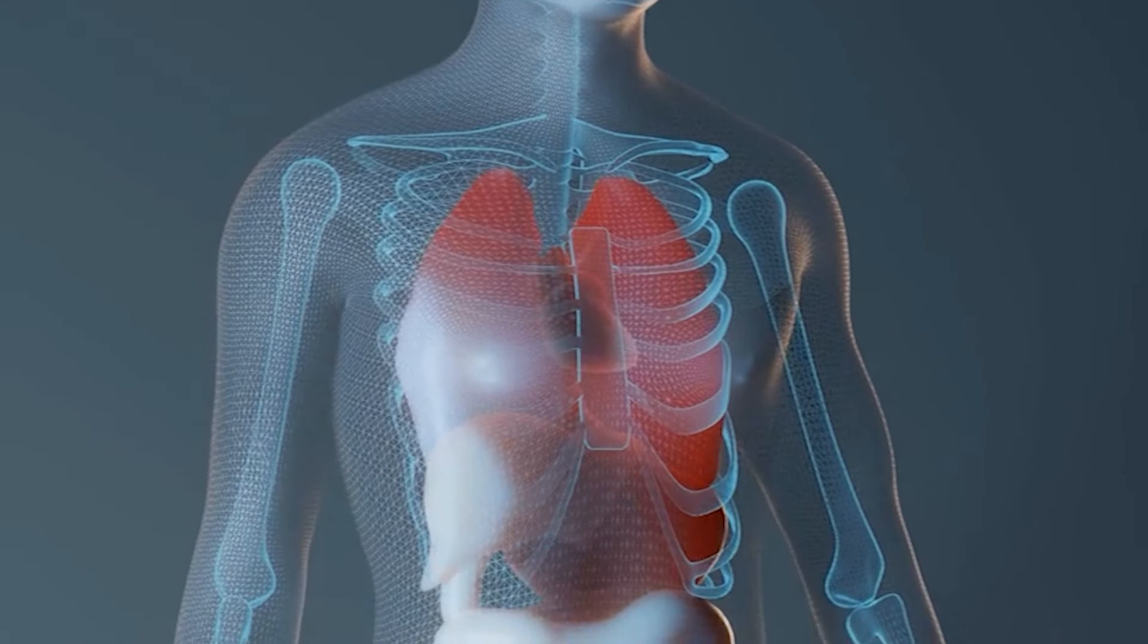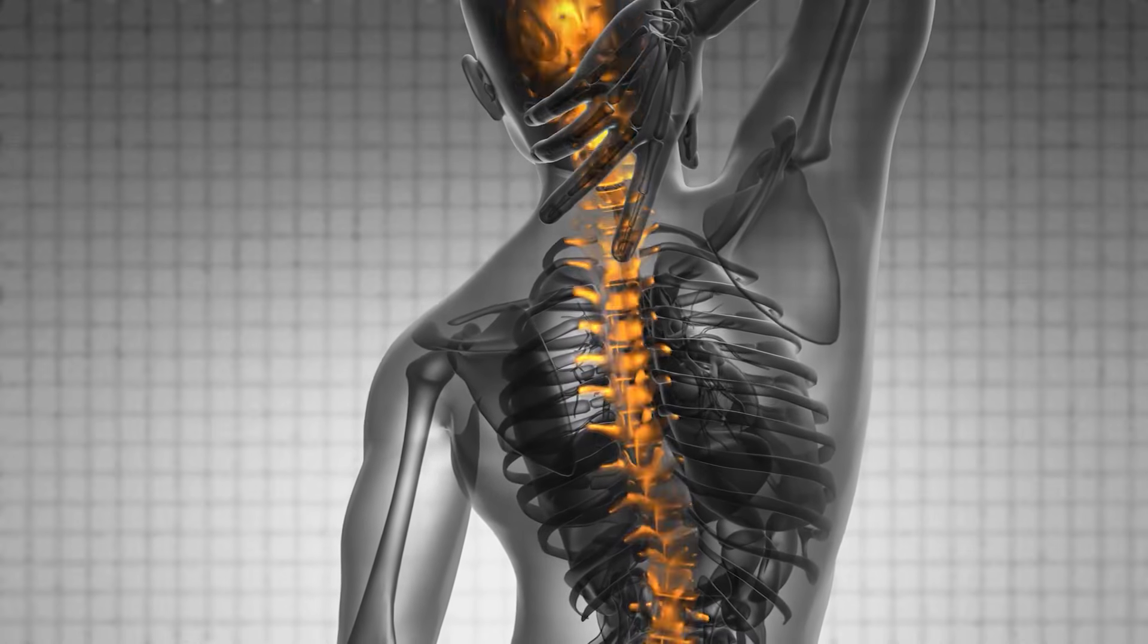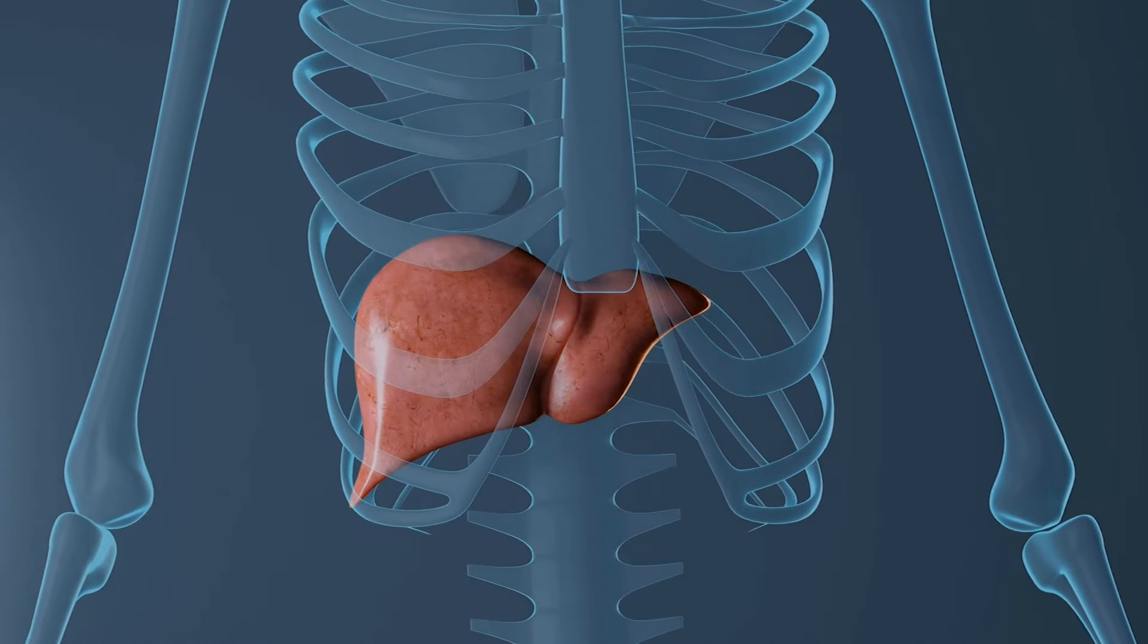For example, water lubricates and cushions your spine, helping safeguard it against daily wear and tear. Water also has a specific relationship with organs like the kidneys and liver.